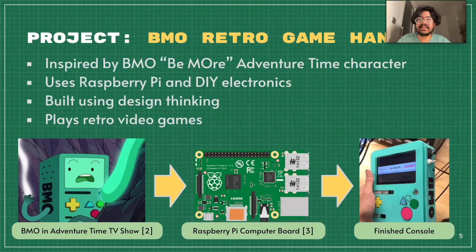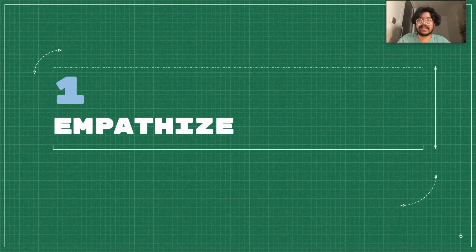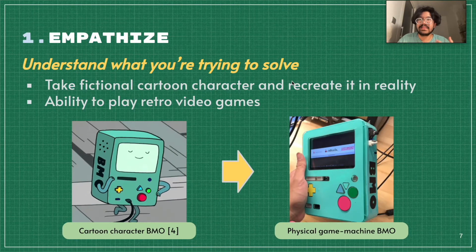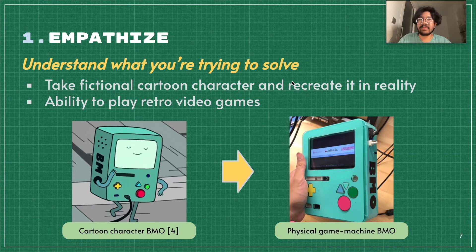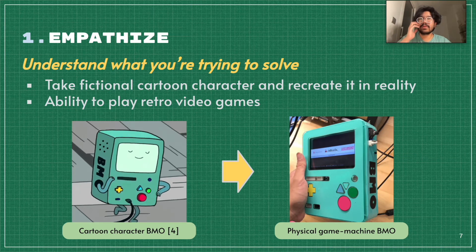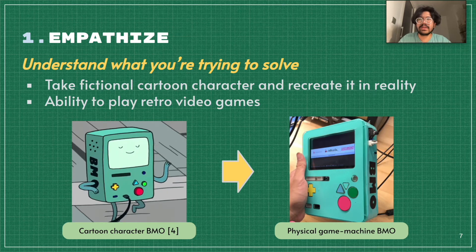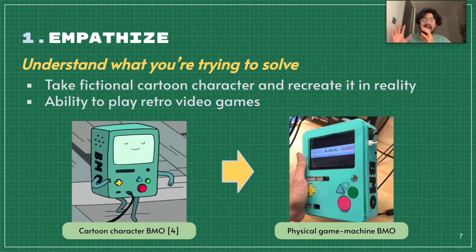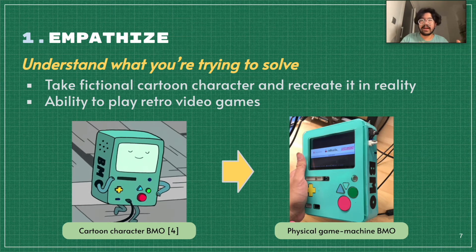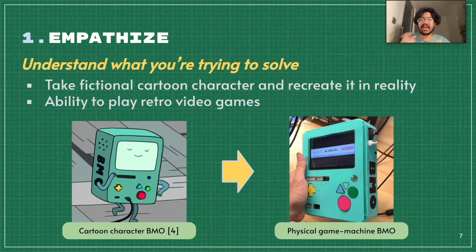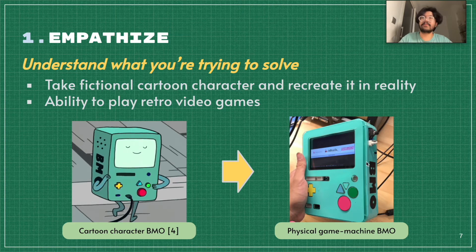So how do I turn this idea into a real project? The design thinking process, of course. Let's go over these five stages. The first stage is empathize — where you understand what you're trying to solve. We take research about what the user needs to understand the problem so we can create a solution. In this case, my problem was that I want to take a fictional cartoon character and recreate it in real life, making it portable and able to play retro video games. So we have BMO here as a cartoon character and want to turn it into something physical that we could play with.